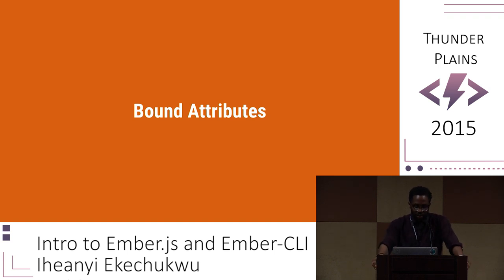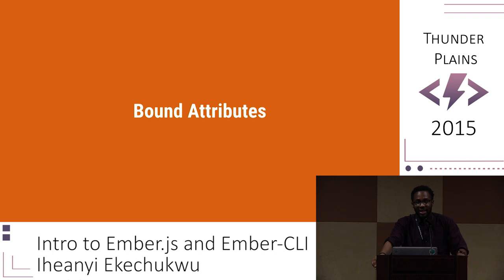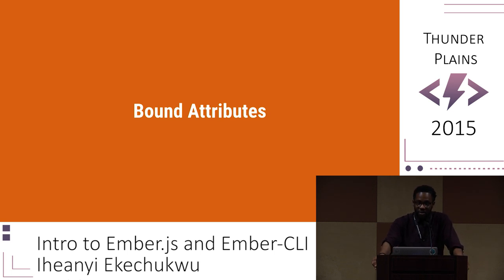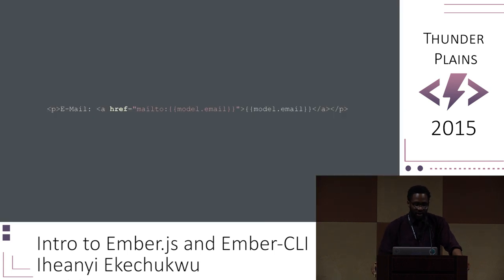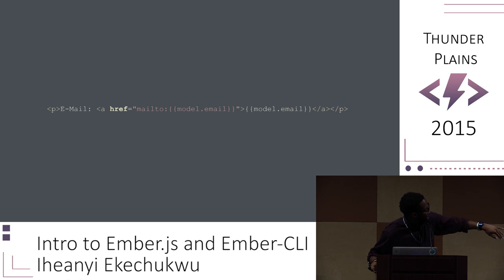Another thing I really like is the binding of attributes. In Ember 2.0, one-way data binding is the default and you have to explicitly set it as two-way. This is helpful for back-end images and setting URL sources. Here's a simple example for a mailto link: since our contact model has an email, we just bind that to model.email within the HTML element, and everything is good.